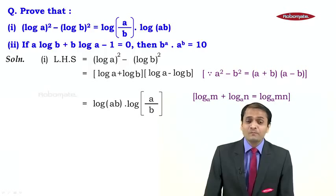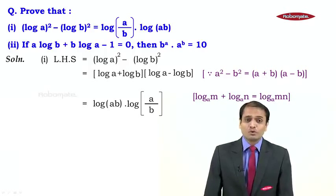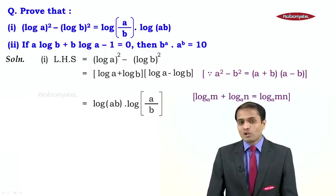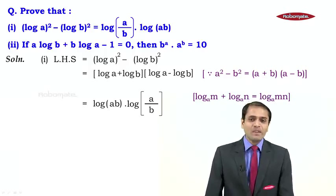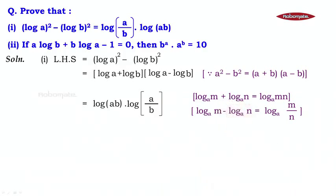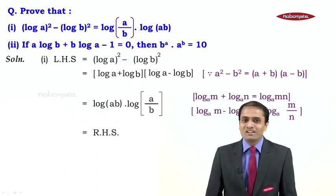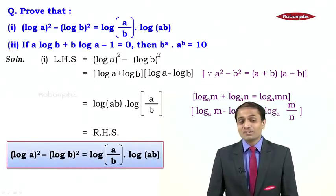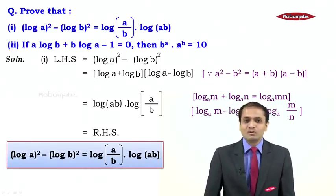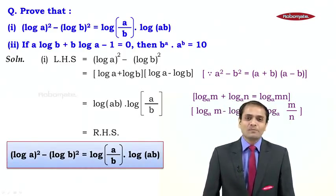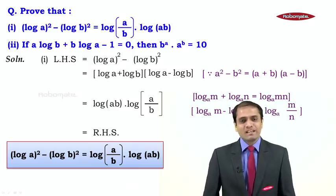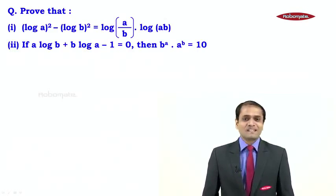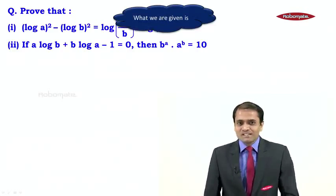We state the reasons for both laws applied: the product law — log m + log n = log(mn) — and the quotient law — log m − log n = log(m/n). We have now obtained the RHS, so LHS = RHS, and hence we have proved that log(a)² minus log(b)² equals log(a/b) times log(ab). Hence proved.